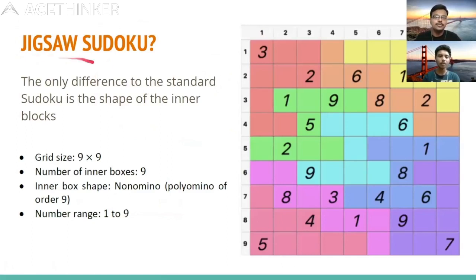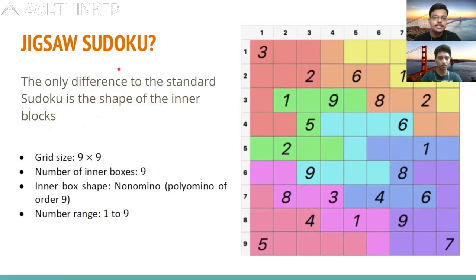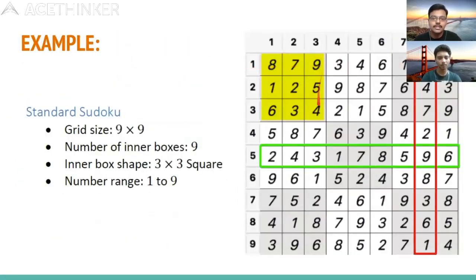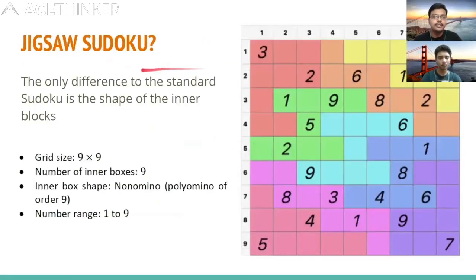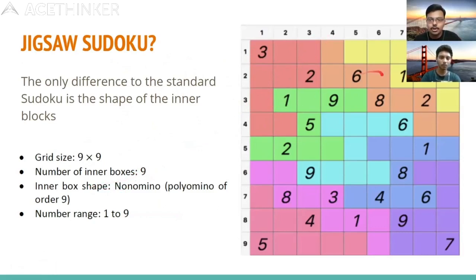This is another type called jigsaw Sudoku. The only difference from standard Sudoku is the shape of the inner blocks. In a standard 9×9, subgrids are fixed 3×3. In jigsaw Sudoku, the inner box can be any random connected shape, but all 9 cells must be connected — depicted by color pooling inside the grid. Numbers still range from 1 to 9.